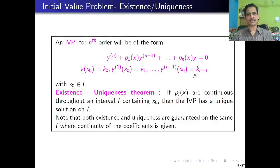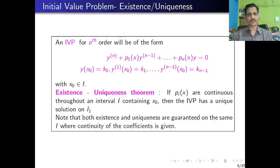Here x₀ is a point taken in the interval I. The existence-uniqueness theorem says that if all the pᵢ's are continuous throughout an interval I containing x₀, then the initial value problem has a unique solution on I. Note that both existence and uniqueness are guaranteed on the same interval I where continuity of the coefficients is given.